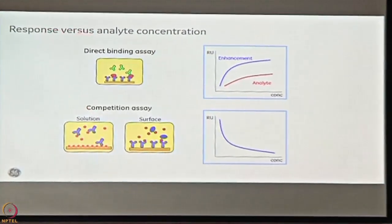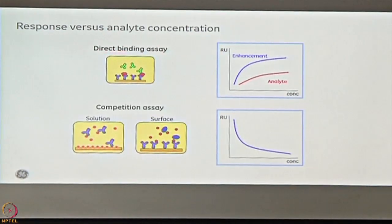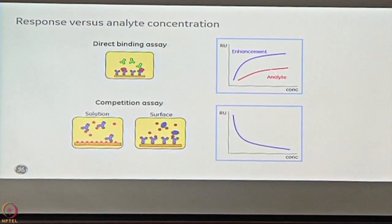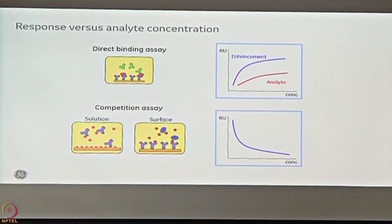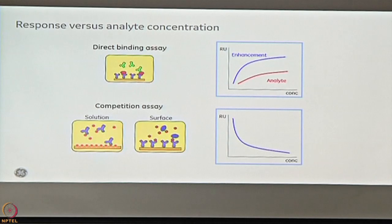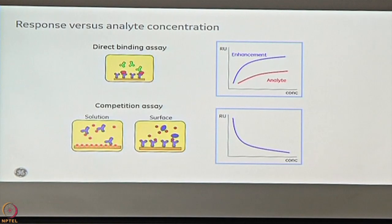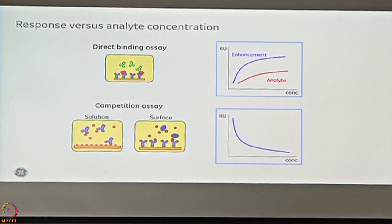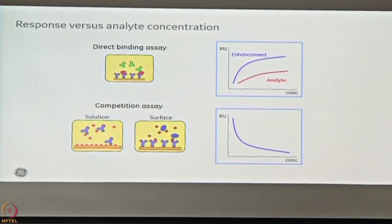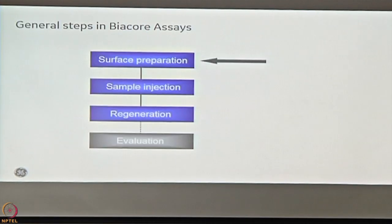To summarize: in direct binding you see an increase in RU with analyte concentration, whereas in indirect binding you actually see a decrease in binding. These are basically the two types of assay formats.